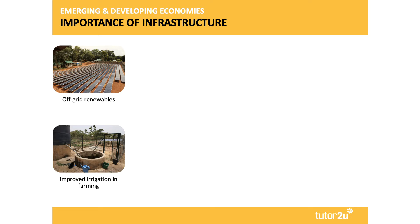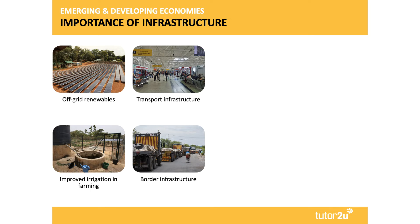In many emerging countries, we're seeing investment in off-grid renewables, including essentially mobile or small-scale renewable energy plants. This is sustainable infrastructure. Improvements in basic irrigation systems can also help to improve farm yields. A lot of countries think long and hard about transport infrastructure — many emerging countries are building high-speed rail systems and new airports.